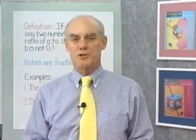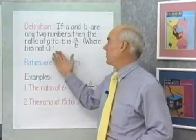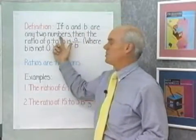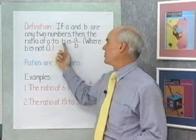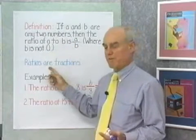In this chapter, we're going to start our work with ratio and proportion. I've written on the board the definition for the ratio of two numbers. If A and B are any two numbers, then the ratio of A to B is A over B, where B is not equal to zero. As you can see, ratios are fractions.